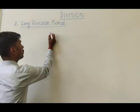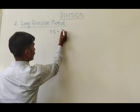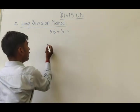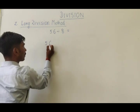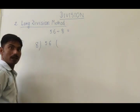Suppose we have to divide a number 56 by 8. What we will do is first we will write this 56 in this way, and this 8 by which we have to divide here like this.